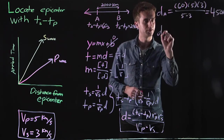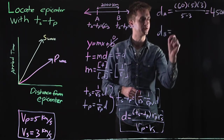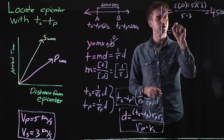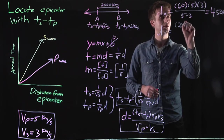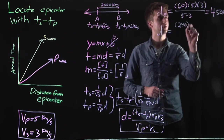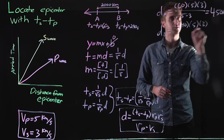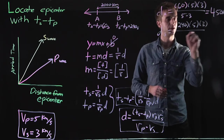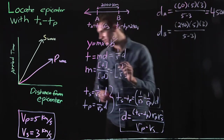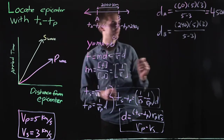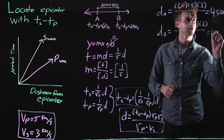We can do the same thing for Station B: 240 seconds times 5 km/s times 3 km/s, divided by 5 minus 3 km/s. The answer is 1,800 km.